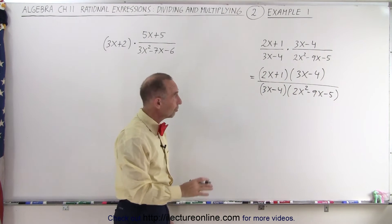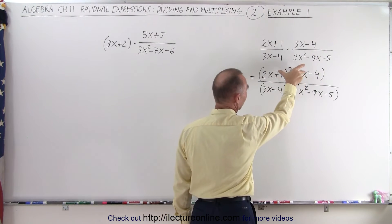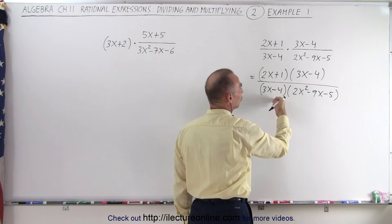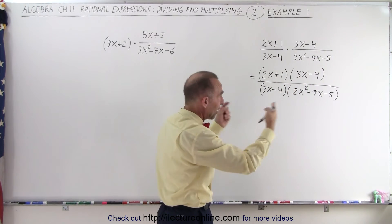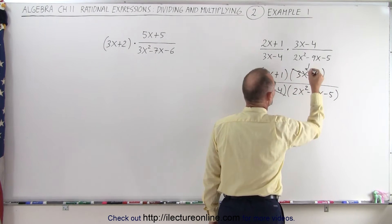Now here, since everything is multiplication and division, these two are multiplied, these two are multiplied, and we're dividing the numerator by the denominator. We could already simplify these two, or we could wait until the end until we factor everything out. It doesn't really matter, but you may want to go ahead and already simplify those two.